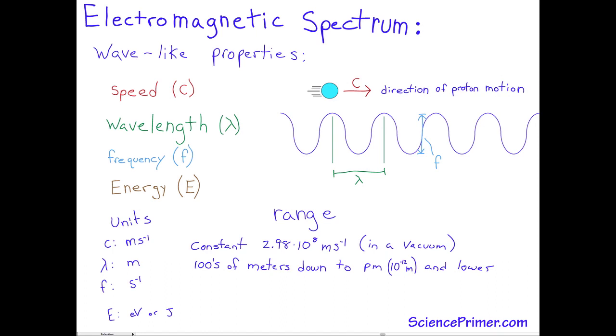Radiation with the shortest wavelengths have the highest frequencies. These frequencies can be greater than 10 to the 20 cycles per second for gamma rays. Longer wavelength radiation, such as radio waves, have lower frequencies. These are in the range of millions of cycles per second.